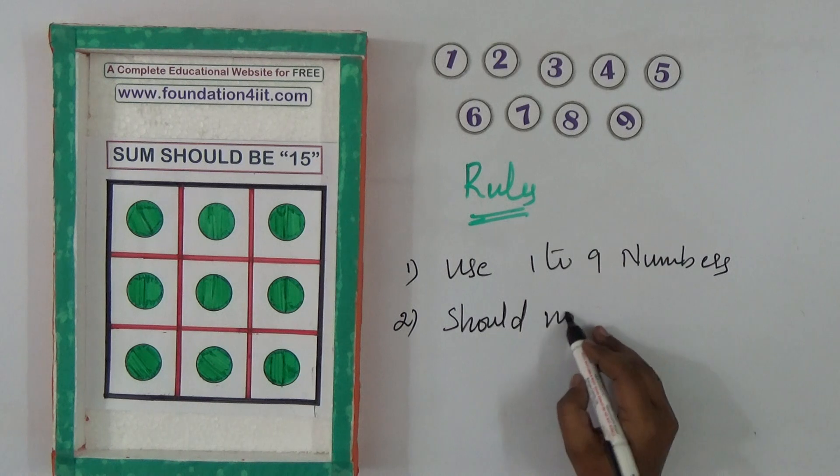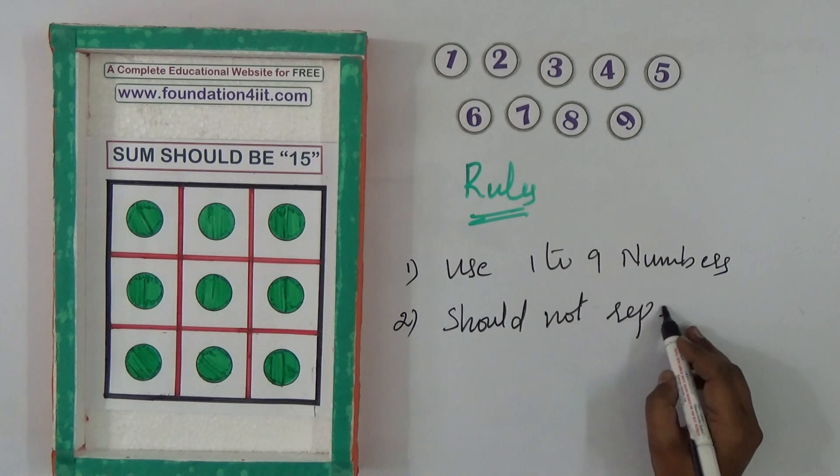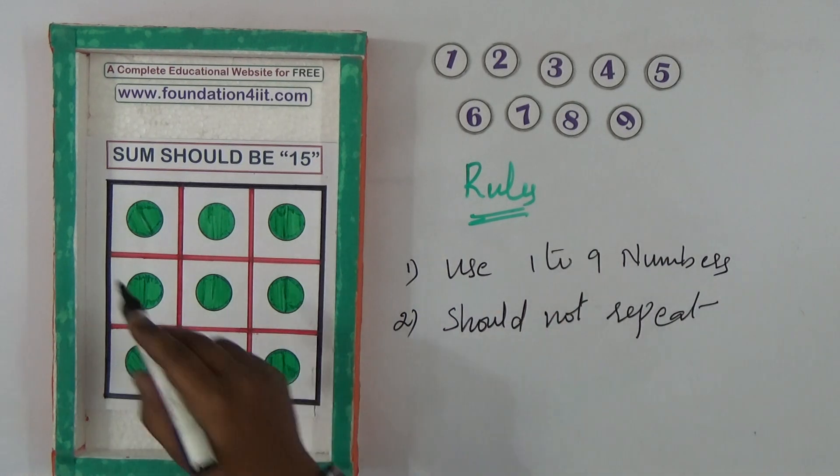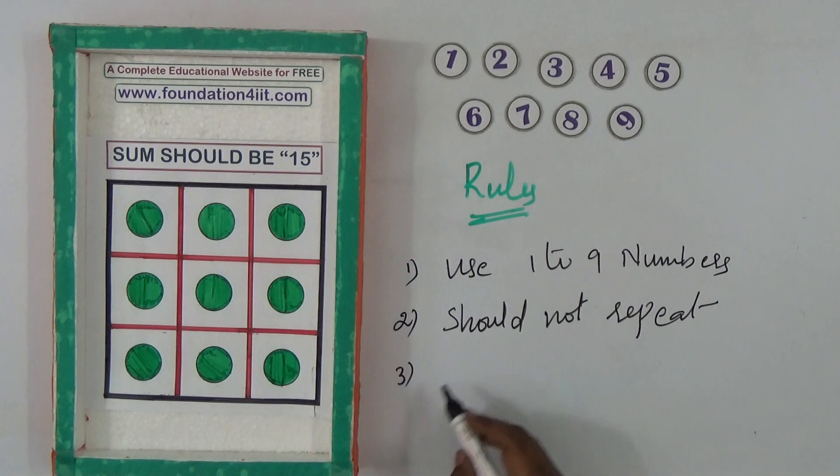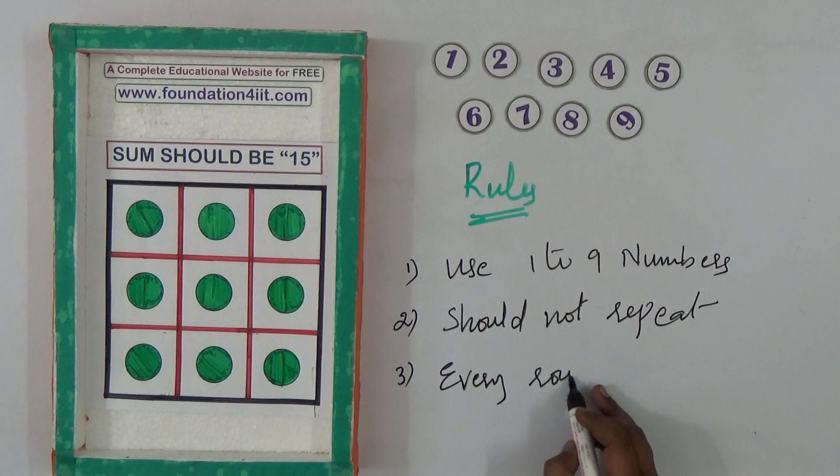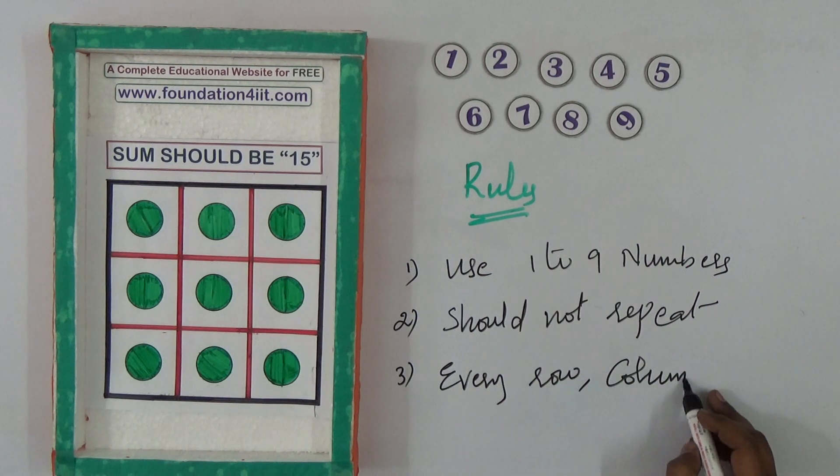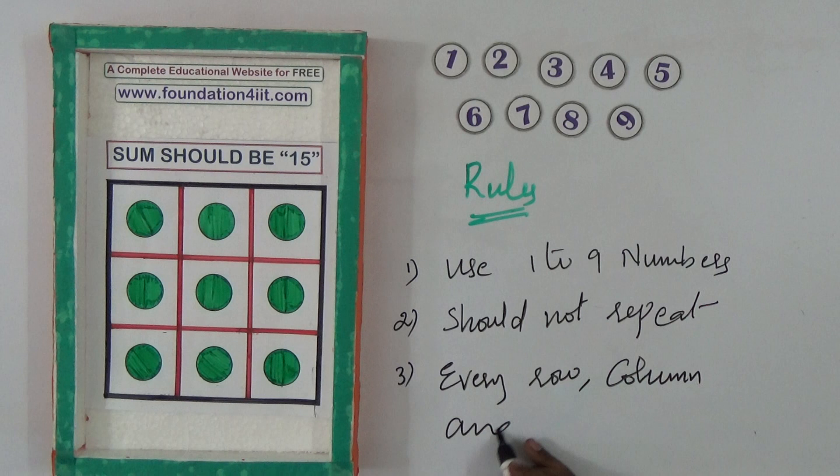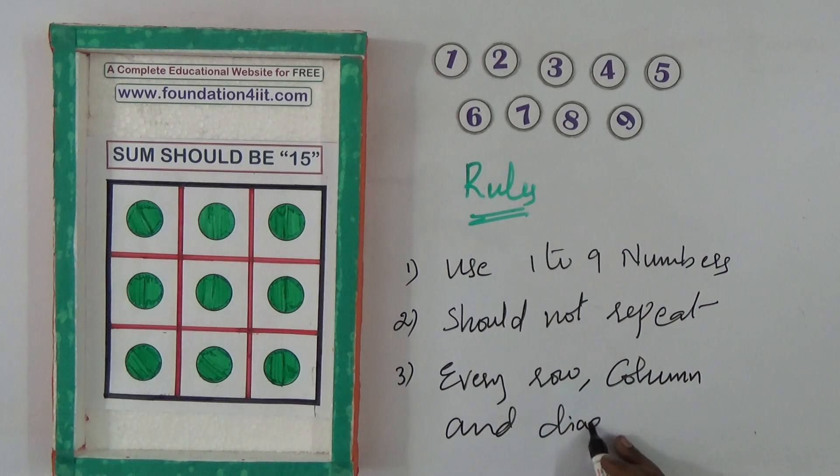Should not repeat in this circles. Every row as well as column also, and diagonal. So important thing is even diagonal also, sum should be 15. These coins we need to place.